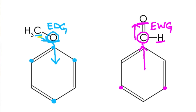So notice: all arrows pointing into the ring means electrons are being donated into the ring, making this an electron-donating group. And in this example, all arrows are pointing out of the ring, meaning electrons are being withdrawn out of the ring, making this an electron withdrawing group.